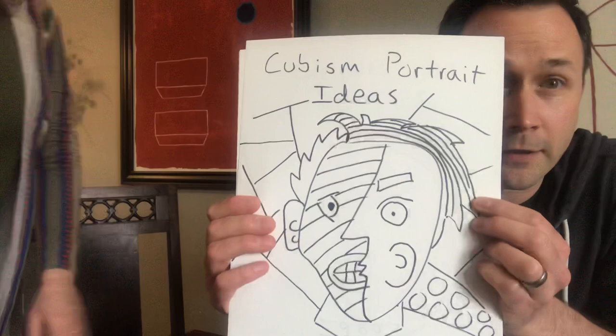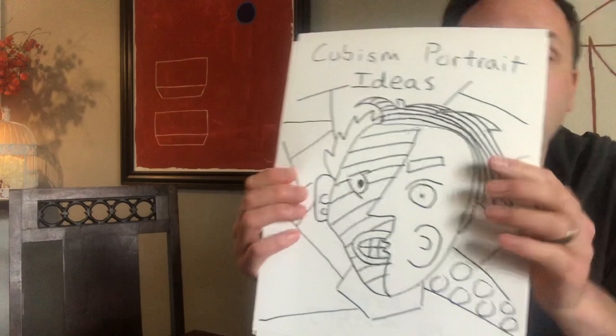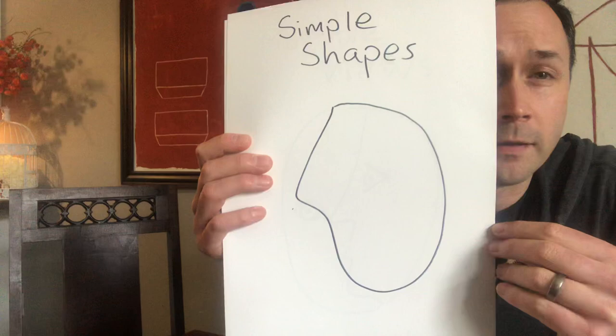Pablo Picasso and cubism is probably one of my favorite things to get into. At the end of this lesson we're going to cover quite a few different ideas that cover cubism portrait ideas. One of the first things we're going to look at is that sometimes just using simple shapes is what's going to make this lesson very successful with cubism.